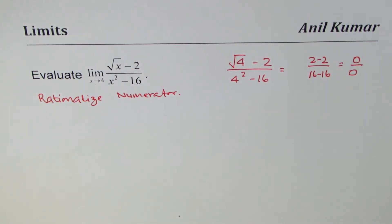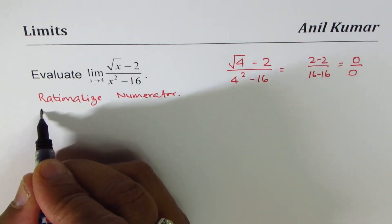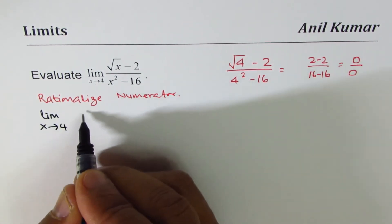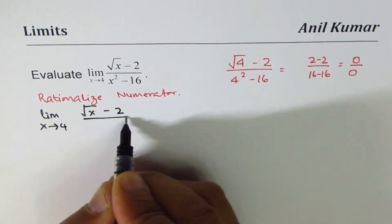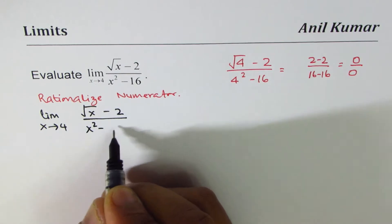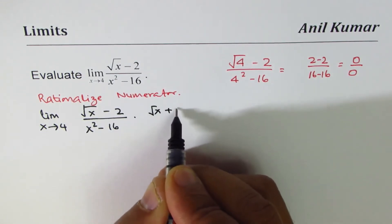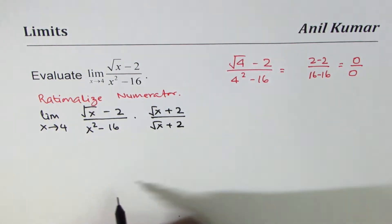So let's rationalize the numerator and then find the limit of the function if it exists. The question is limit x approaches 4 for the function square root x minus 2 divided by x squared minus 16. We'll multiply and divide by square root x plus 2 to rationalize this particular function.